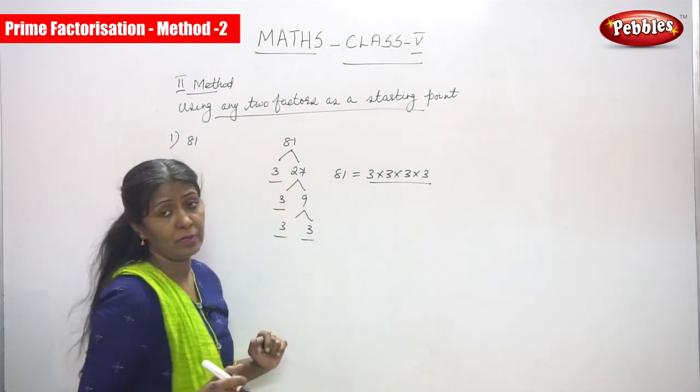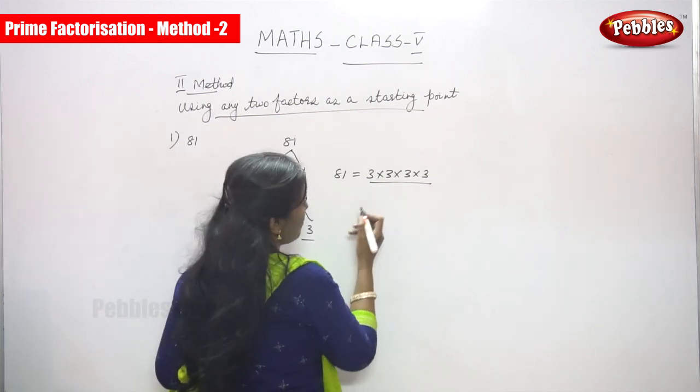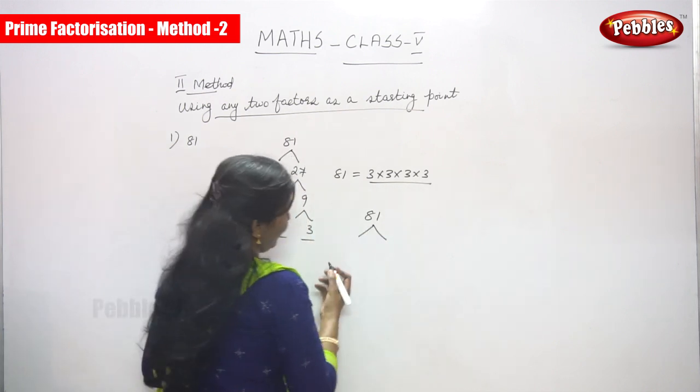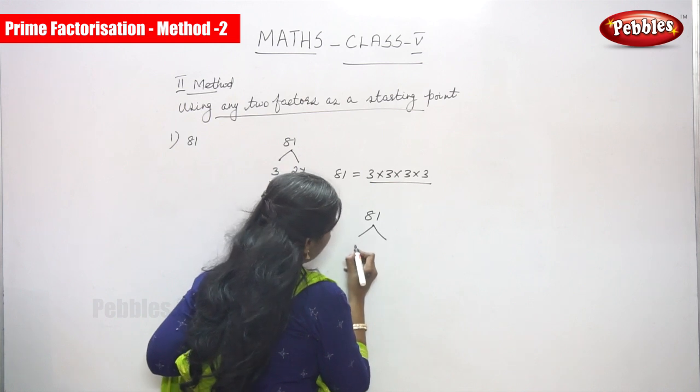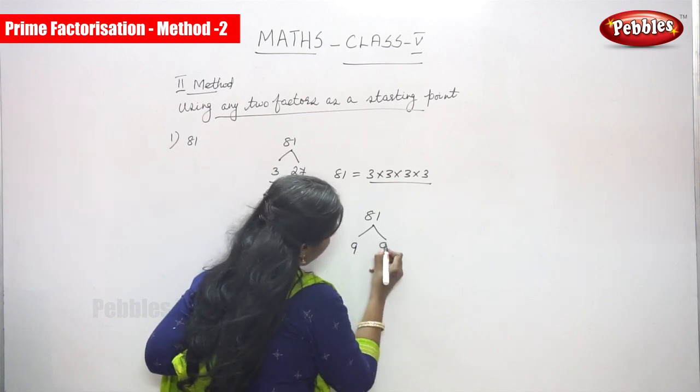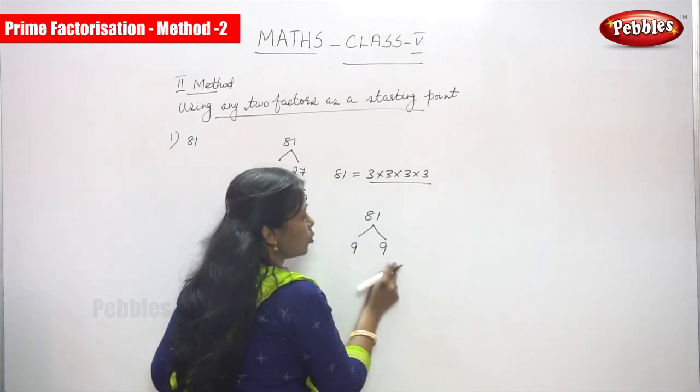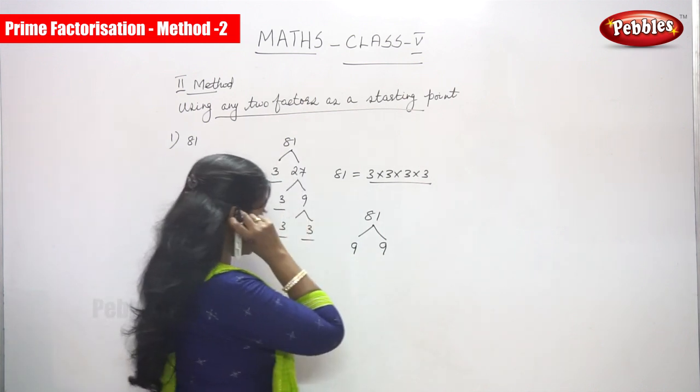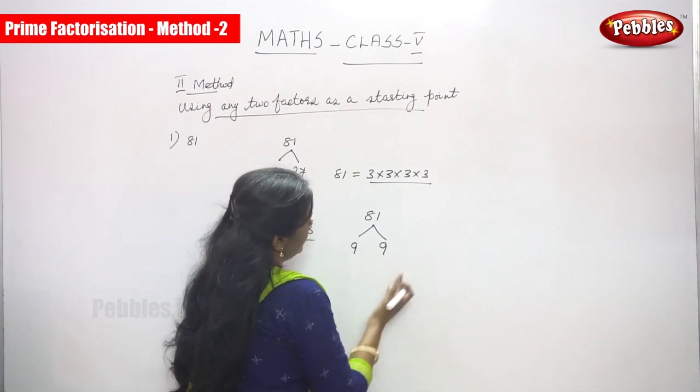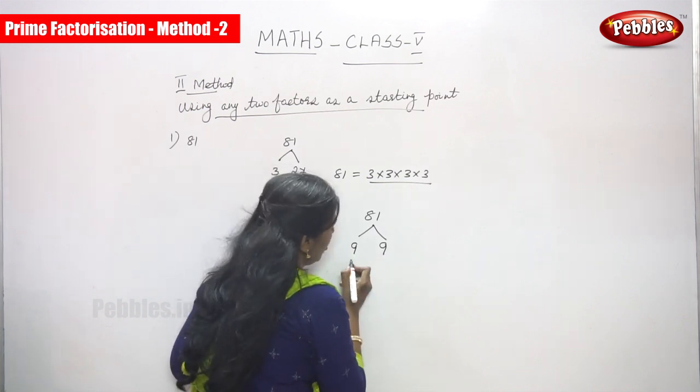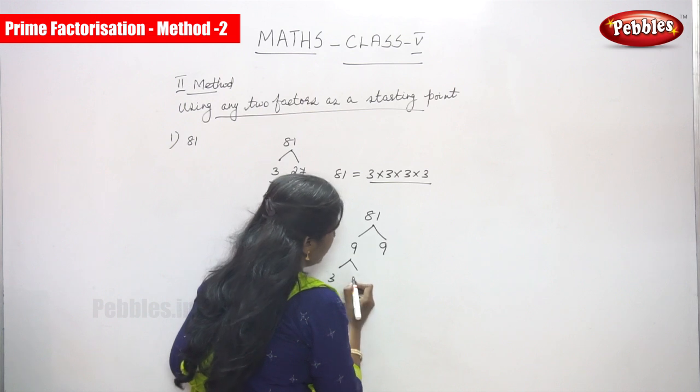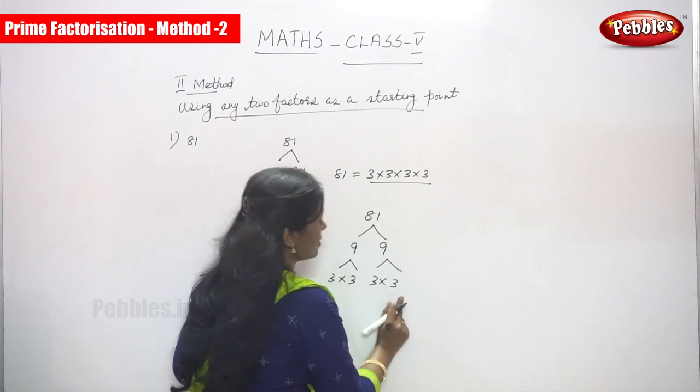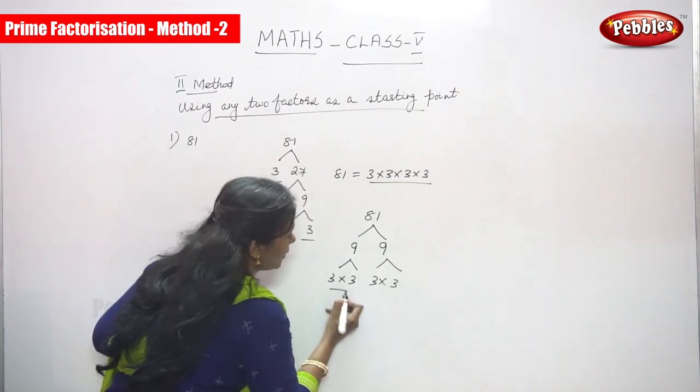So any two factors I've taken, so the same method but we have to take again one more variety. 81, you can take any two factors, that is 9 into 9. The same sum but one more type we can do. So in the 9 we have to take 3 into 3 is 9 as a factor, and here also 3 into 3 as 9 as a factor.